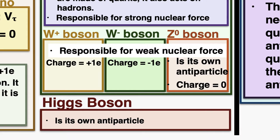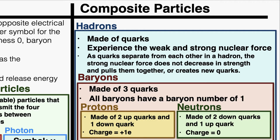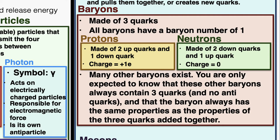Moving on to composite particles: all the composite particles we'll discuss are hadrons, made of combinations of the six types of quarks. Hadrons experience both the weak and strong nuclear force. As quarks separate within a hadron, the strong nuclear force does not decrease — it pulls them together or creates new quarks. There are two types of hadrons: baryons, made of three quarks, with a baryon number of 1. Familiar baryons include protons (two up quarks and one down quark) and neutrons (two down quarks and one up quark). Other baryons always contain three quarks and no antiquarks, and have properties equal to those three quarks added together.